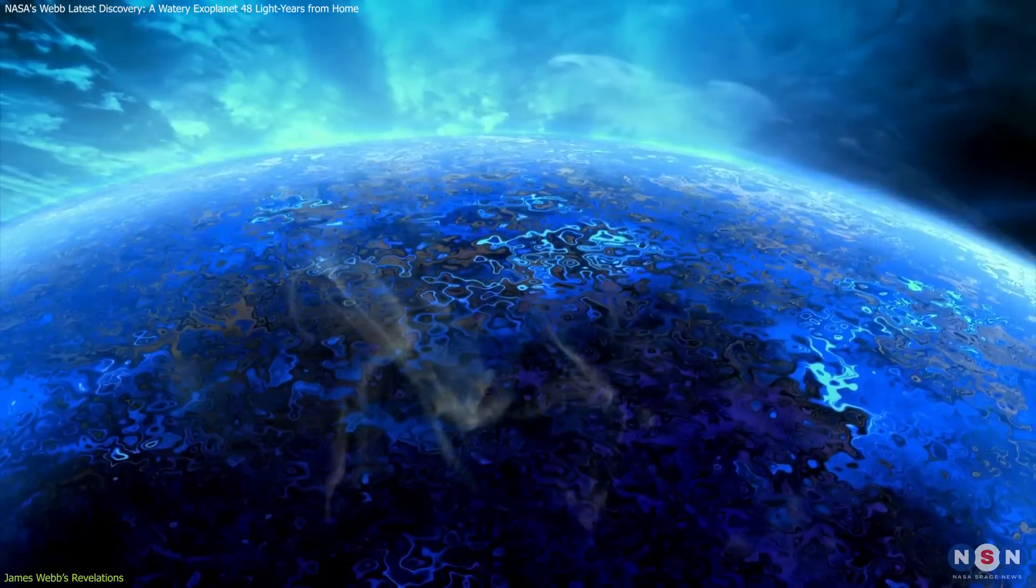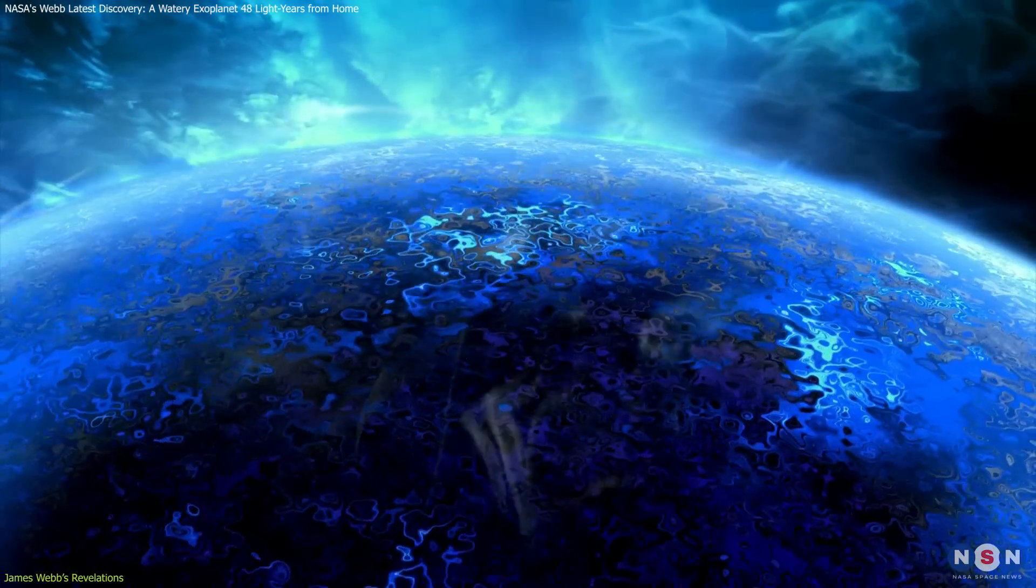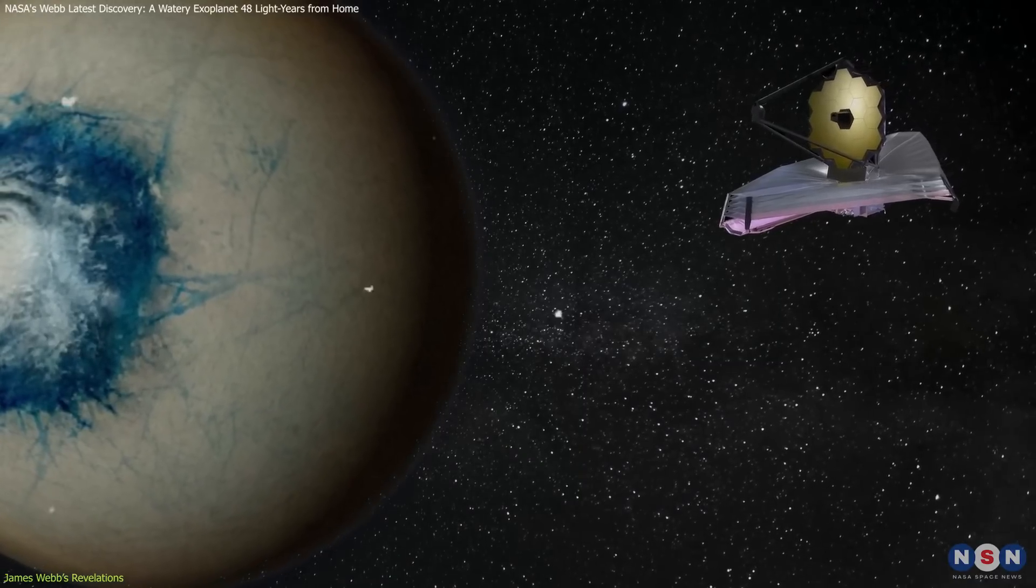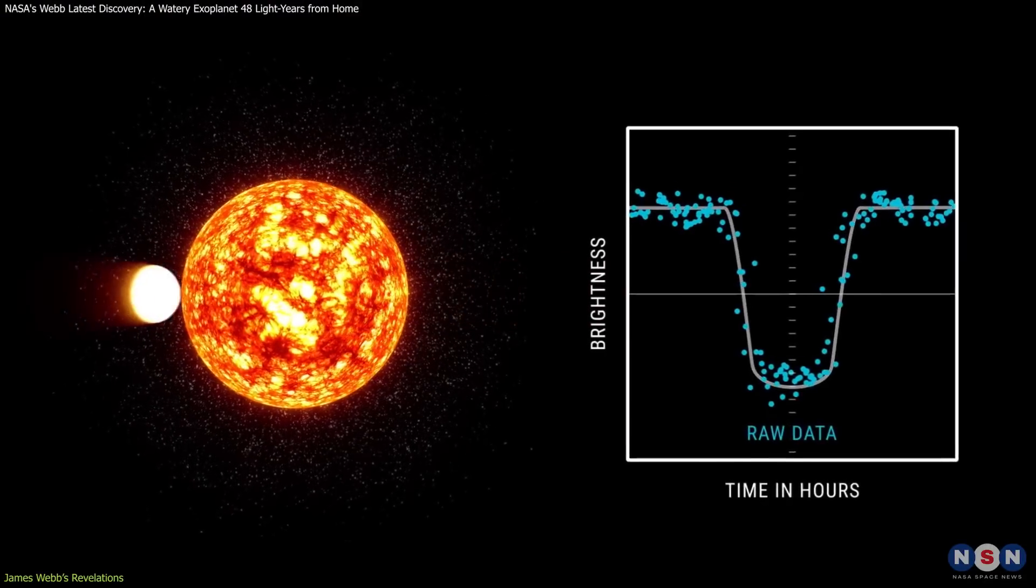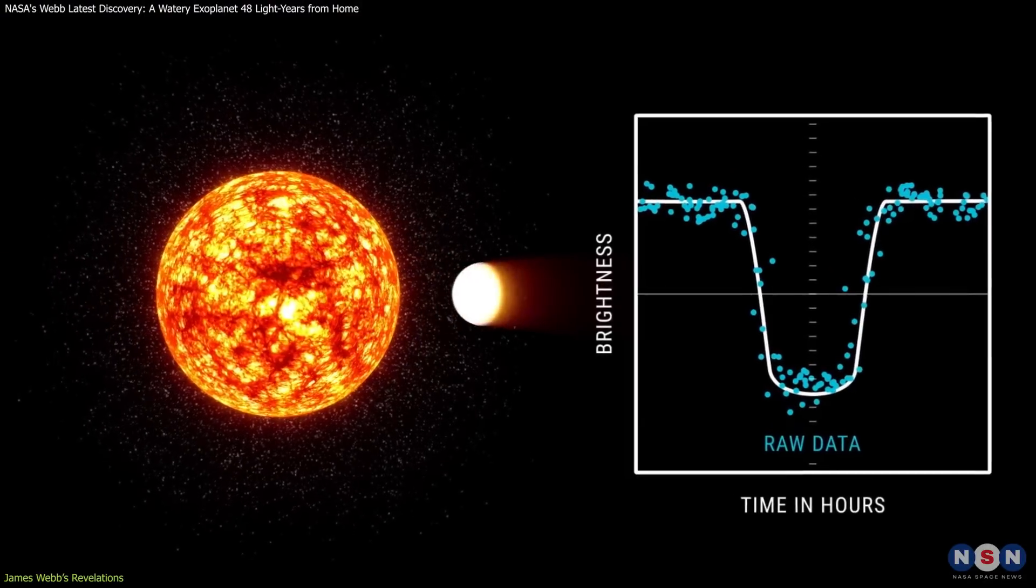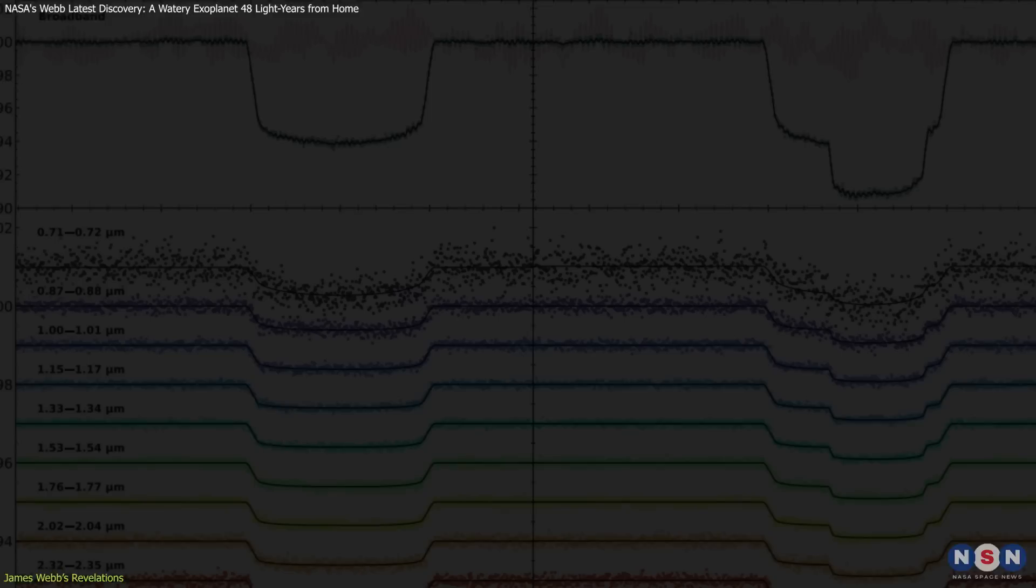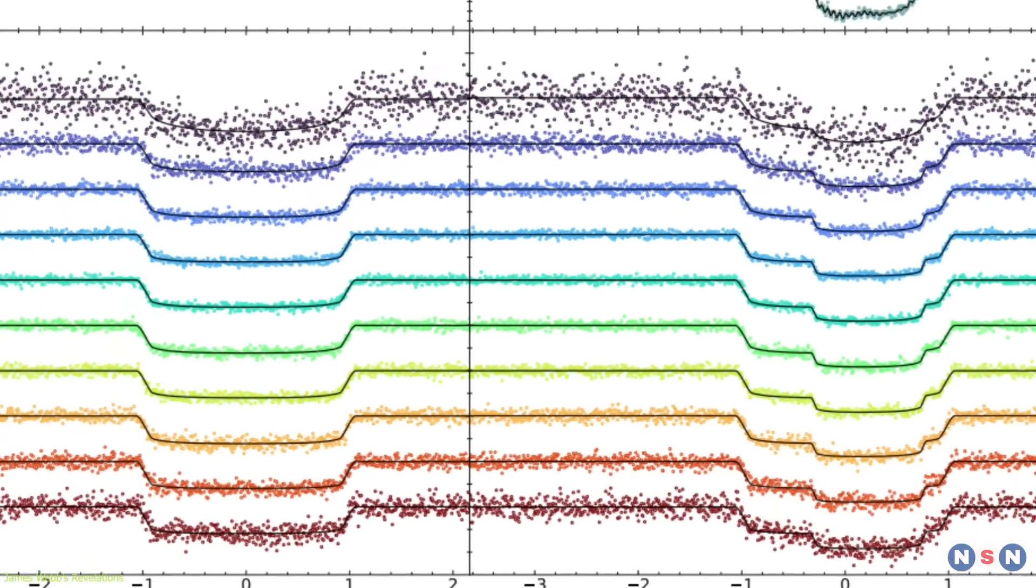However, confirming the presence of nitrogen, oxygen, carbon dioxide, and other vital gases in this planet's atmosphere requires more observation. Each pass of the planet in front of its star offers a unique opportunity to capture more data, enhancing our understanding of its atmospheric composition. These observations also help astronomers model the planet's climate and predict its surface conditions.